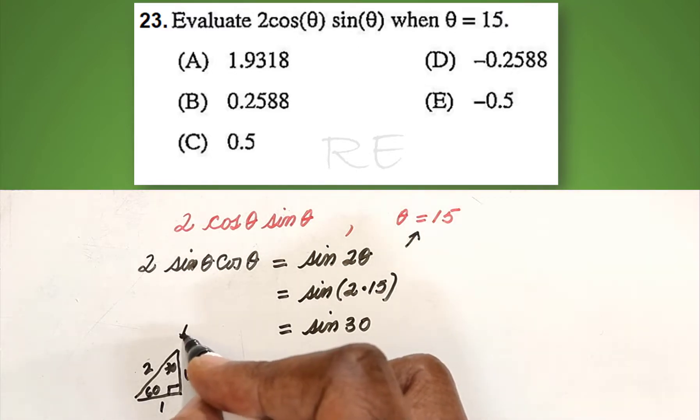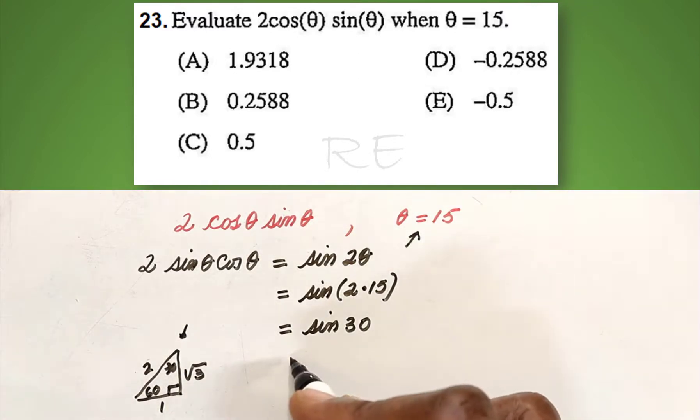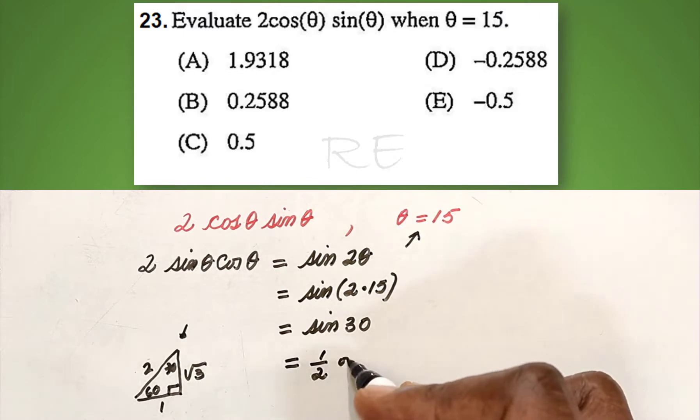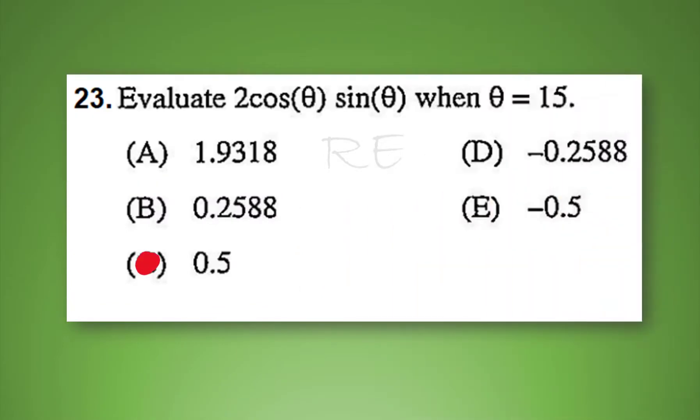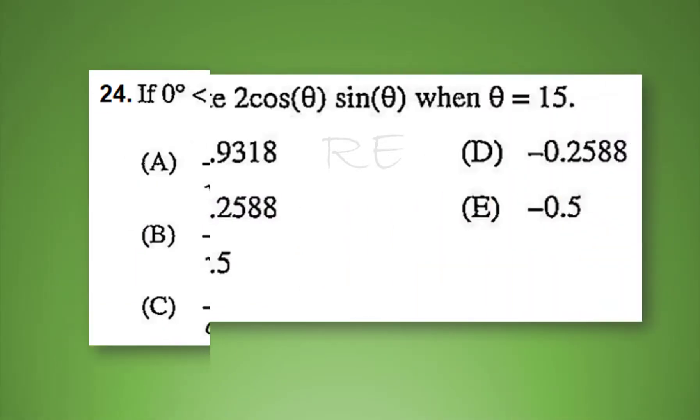This is 30 degrees right here. Sine 30 will be the opposite, 1, over the hypotenuse, which is 2. So sine 30 is equal to 0.5. The correct answer is C.